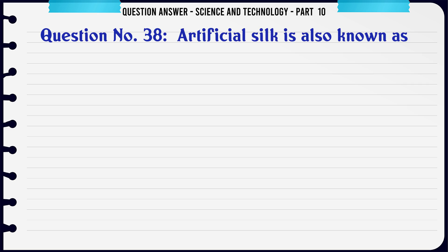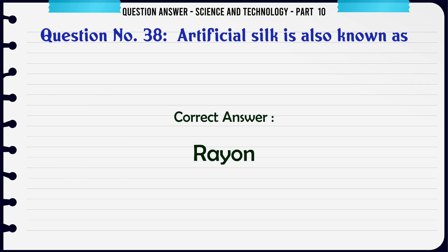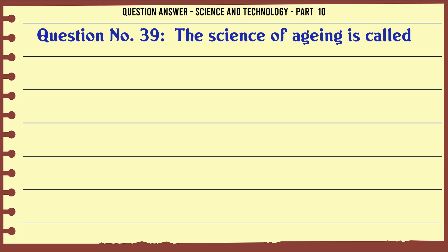Artificial silk is also known as. A. Nylon. B. Rayon. C. Dacron. D. Fiberglass. The correct answer is Rayon.